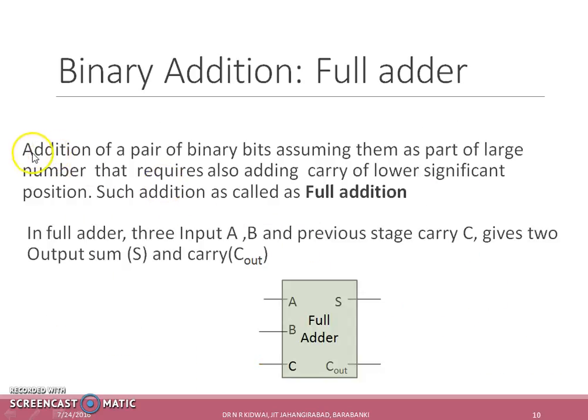Based on the example, full addition can be defined as addition of a pair of binary bits assuming them as a part of large number that requires also adding carry of lower significant position. Thus a full adder circuit has three inputs, the numbers A and B and previous stage carry C, and gives two outputs sum and a carry C out.